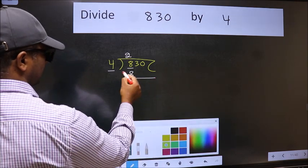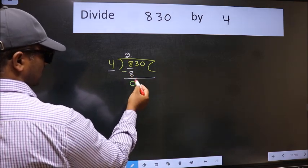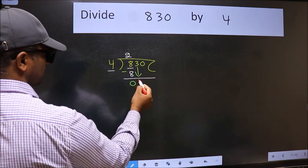Now, we should subtract. We get 0. After this, bring down the beside number. So, 3 down.